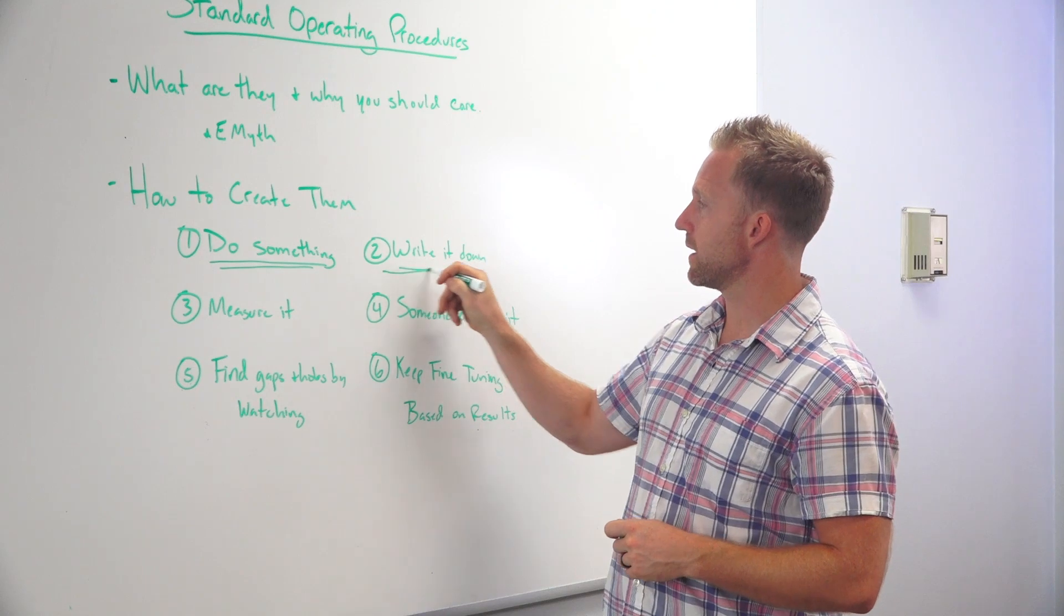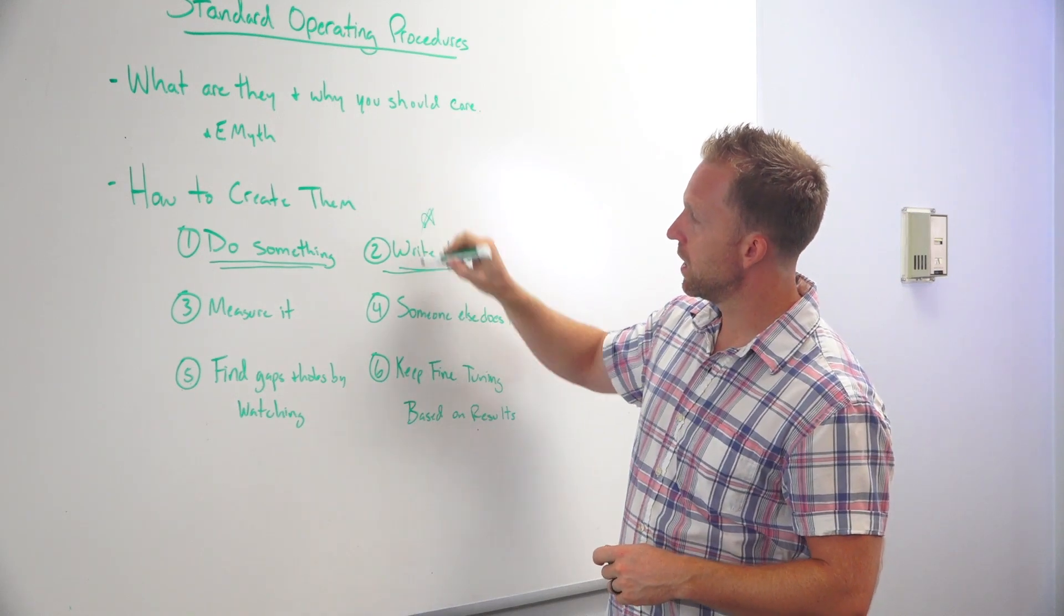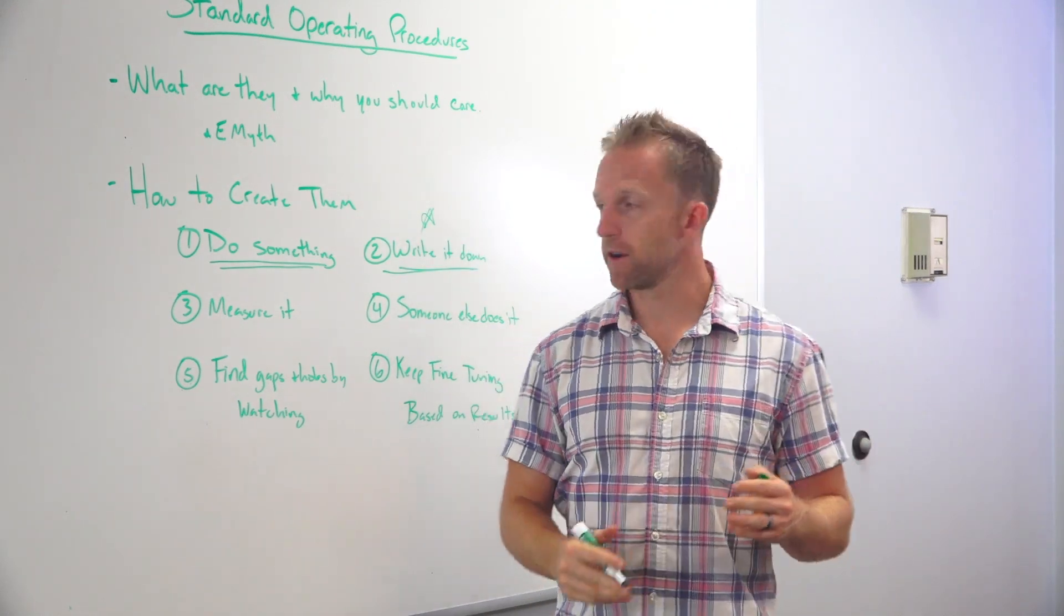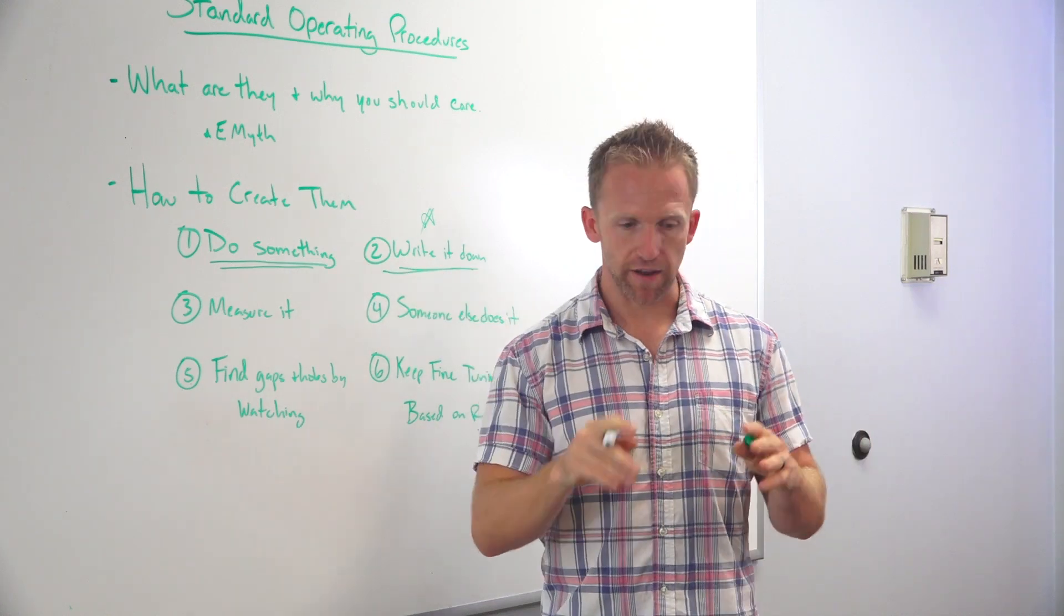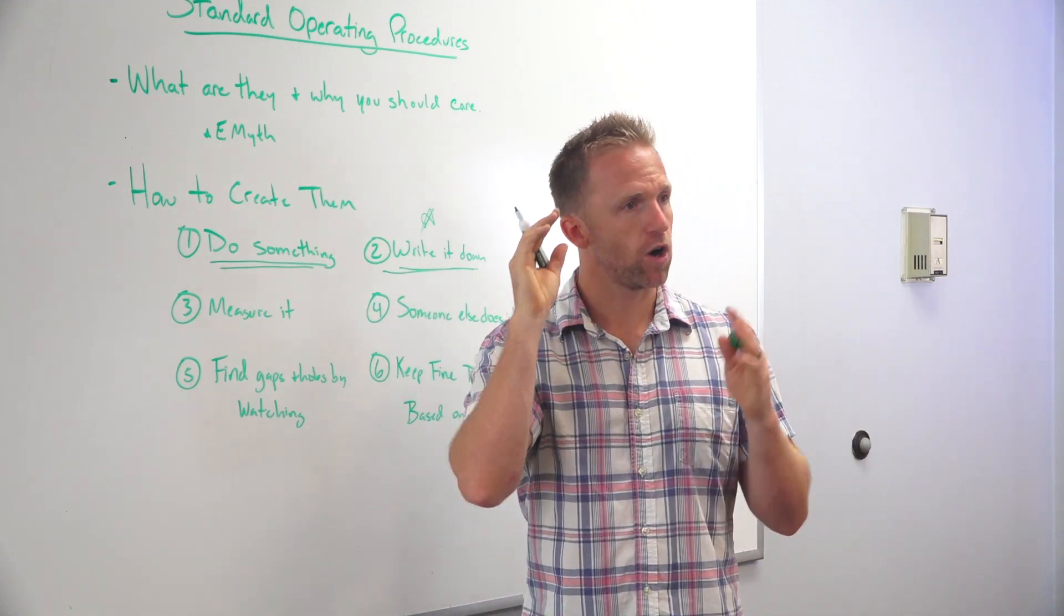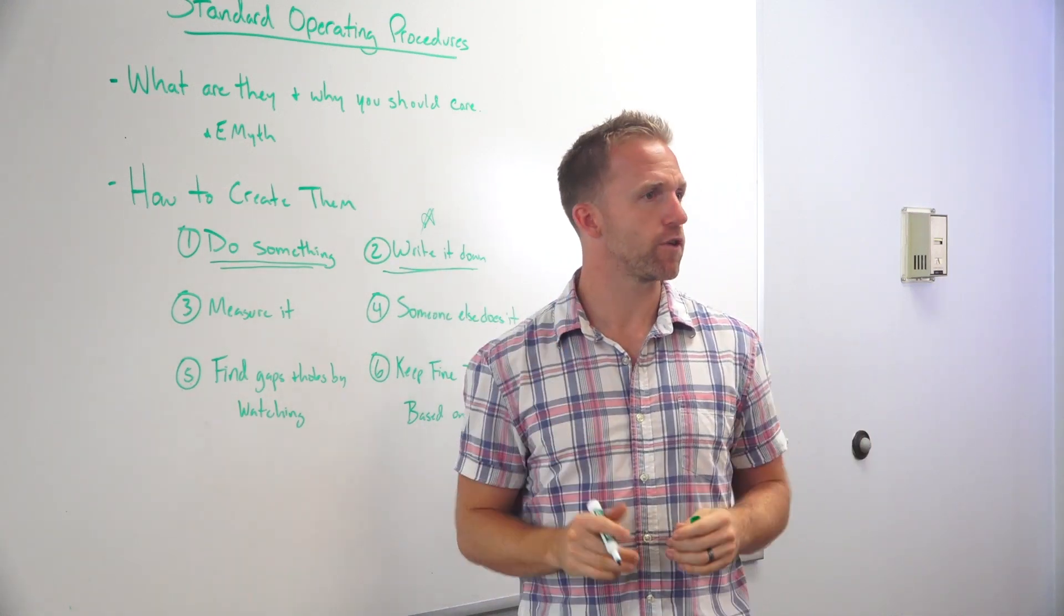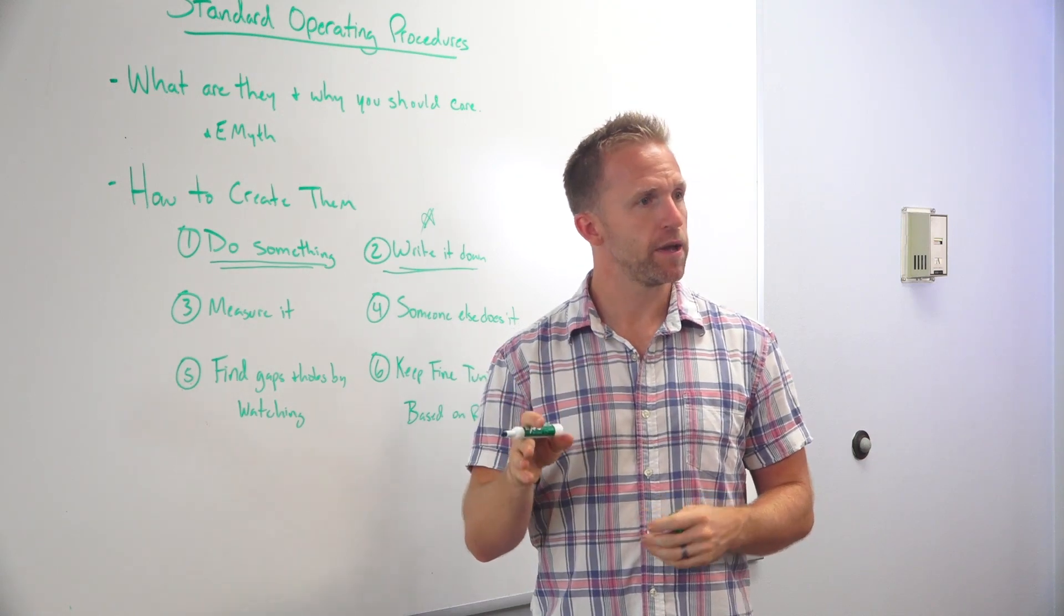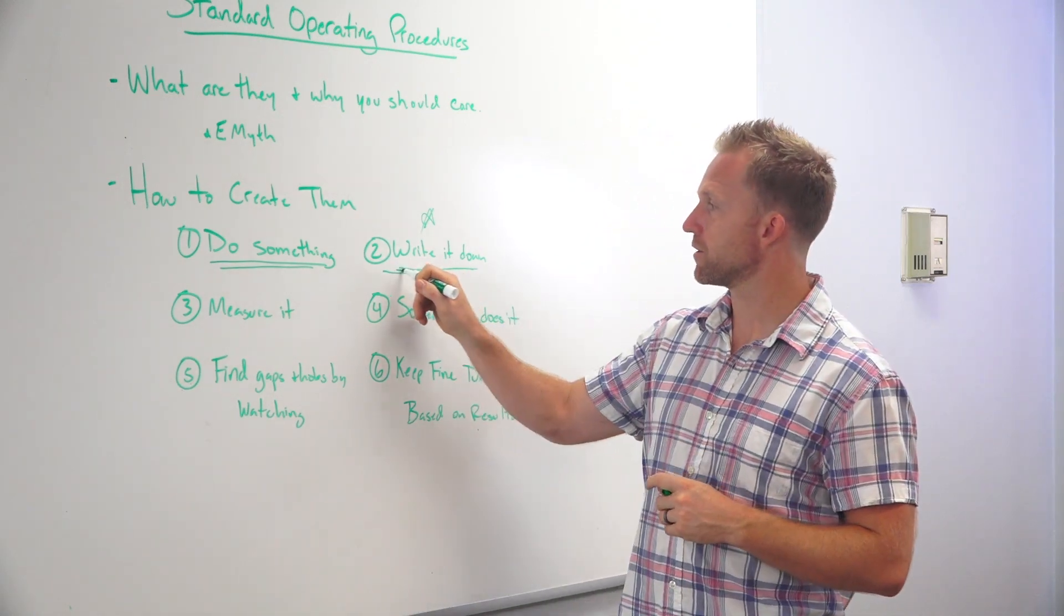So the first thing is you're doing something. The next thing is you need to write it down. This is the beginning of your standard operating procedure is actually writing it down, type it up and put a label on it, call it whatever that procedure is going to be. Just give it a name. And that's a place to start. So you're going to write it down.